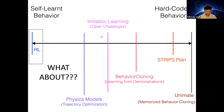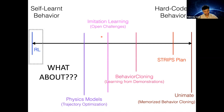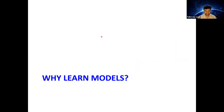One question that comes up is: we have done all of these learning-based methods, but in many problems, good models are available. For example, if I need to push an object, I might have a model of pushing. Or if I want to grasp an object, I might know how to compute forces and where to put my hand. So one question is: why learn models in the first place? This is something we touched upon in lecture one, but we're going to revise those ideas and look at how we can learn models.